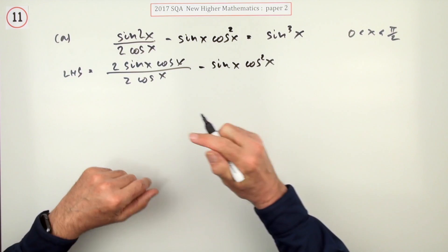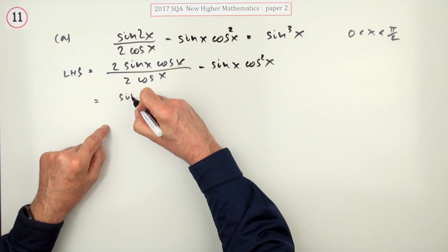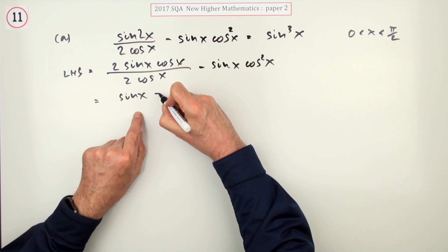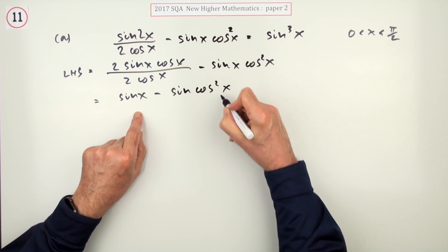Don't write equals anything, I'm just playing with this side. Now, the cos's cancel, and the 2's cancel, just to leave me with sine x minus a sine x times a cos squared x.